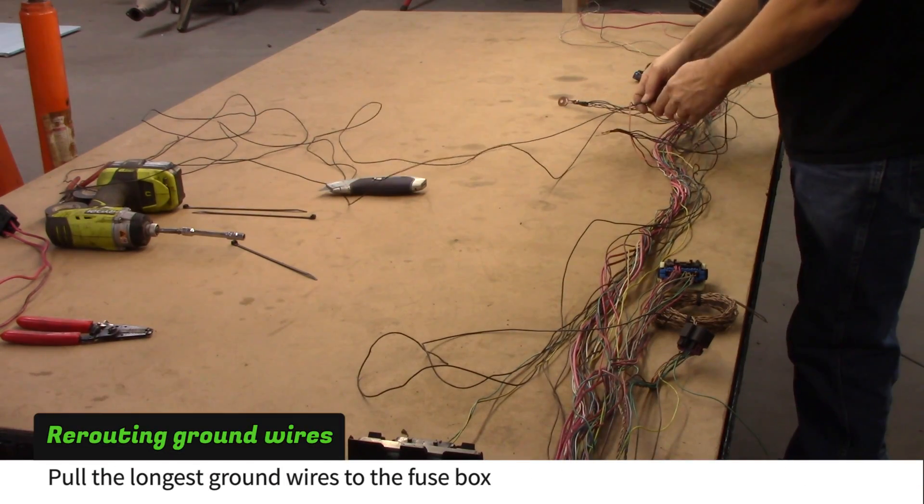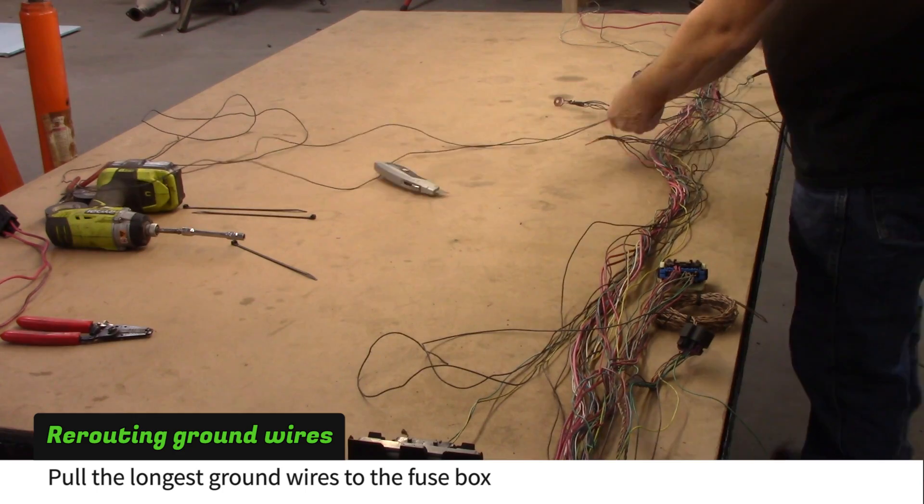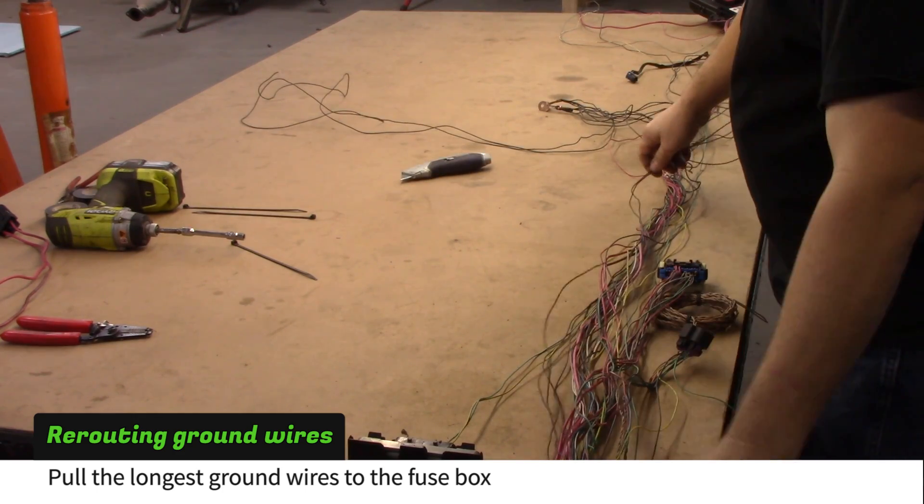Find the two longest ground wires coming from the ground lugs. They'll be used to extend the fuel pump grounds later. Route these two grounds toward the fuse box.